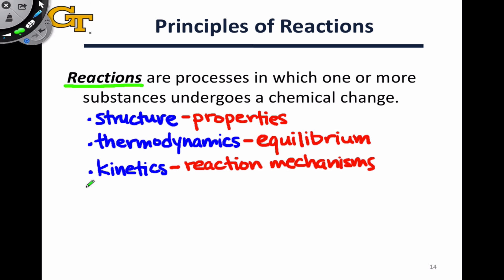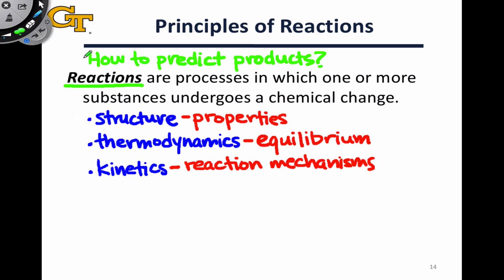In other words, we're given the reactants and products of a chemical process. At this point, we're going to move into a hugely important question, which is how to predict products of a chemical reaction. Answering this question is really important because it allows us to look at a set of reactants and predict whether a reaction will achieve our desired outcome or not. To some extent, this is a thermodynamic question — chemical reactions have to be consistent with the laws of thermodynamics, and we've addressed that already.